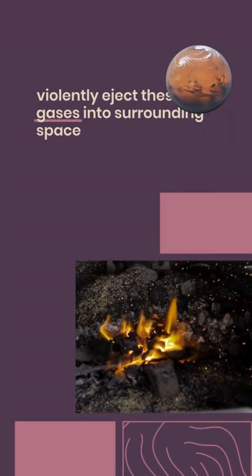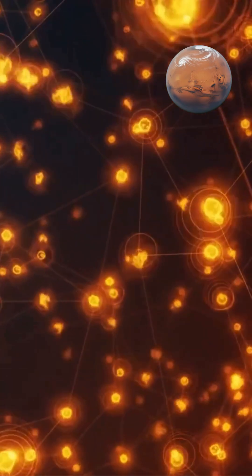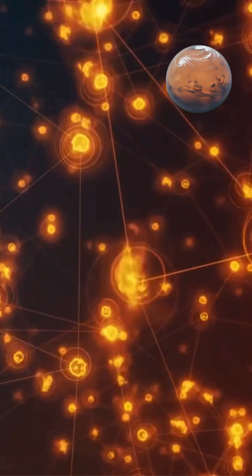Supernova explosions, occurring when massive stars exhaust their fuel, violently eject these new gases into surrounding space, where they seed new star and planet formation. Stellar winds, particularly from massive and evolved stars, continuously blow gases into space during the star's lifetime.